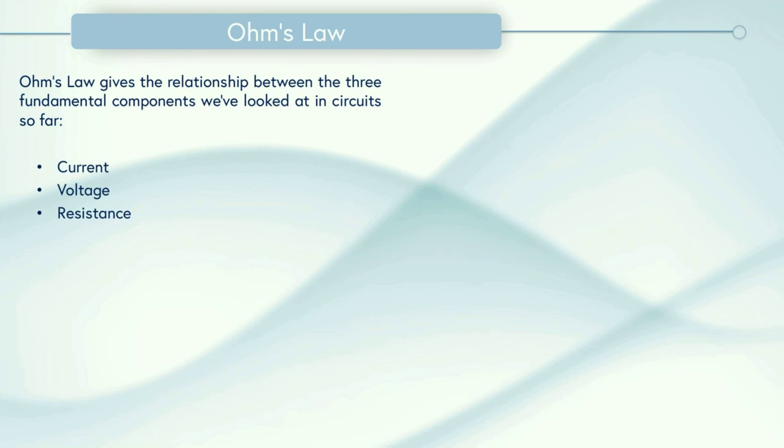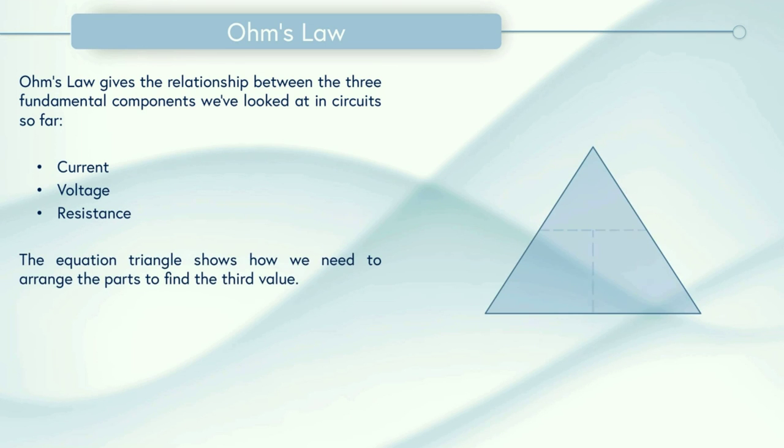Ohm's law gives the relationship between the three fundamental components we've looked at in circuits so far: current, voltage, and resistance. This equation triangle shows how we need to arrange the parts to find a third value. So let's put in our current with the symbol I, our voltage with the symbol V, and our resistance with the symbol R. In the rest of this video we'll run through some examples.